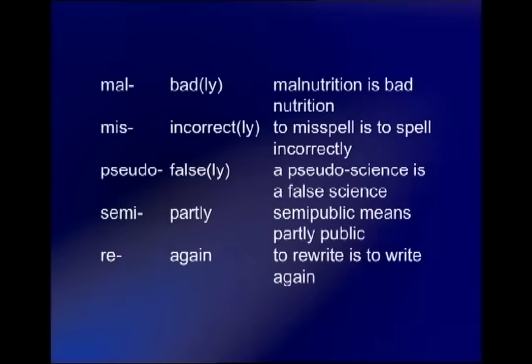The prefix 'pseudo' (p-s-e-u-d-o) means false or falsely — for example, 'pseudonym' means a false name, and 'pseudoscience' means a false science. The prefix 'semi' (s-e-m-i) means partly — for example, 'semi-public' means partly public, and 'semicircle' means not a full circle. The prefix 're' means again — for example, 'rewrite' means to write again.